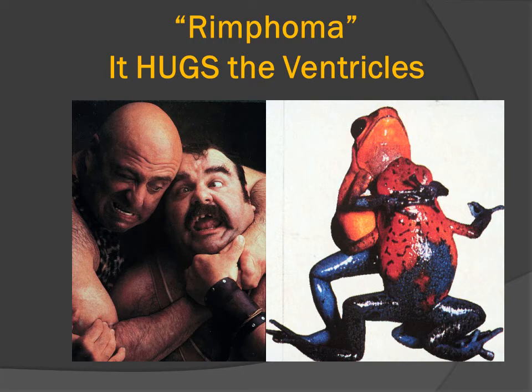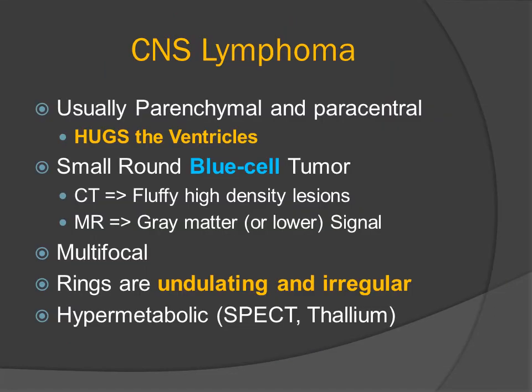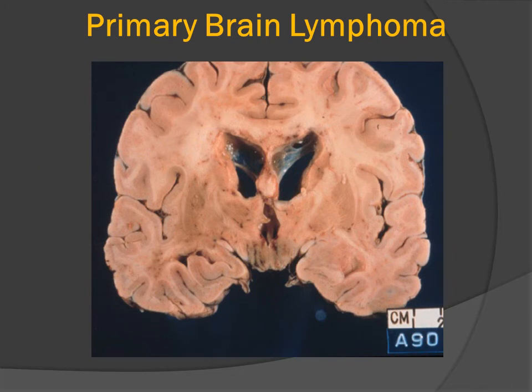We want to remember this appearance of a lesion that is hugging or surrounding the ventricle. One of my colleagues calls this 'rimfoma' because it forms a rim around the ventricular system. So CNS lymphoma is usually parenchymal, paracentral, hugging the ventricles — a small, round blue cell tumor that can be multifocal. When it creates a ring-enhancing lesion, the rings may be irregular and have a wavy or undulating margin. We can also do special metabolic studies, including SPECT, thallium, and FDG studies, in order to demonstrate the increased metabolism of this neoplastic process.